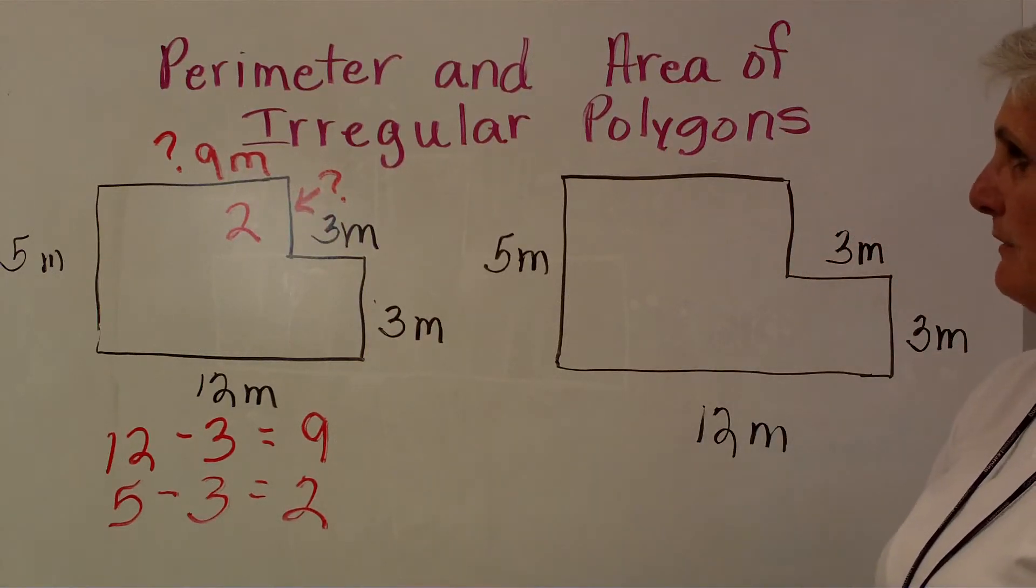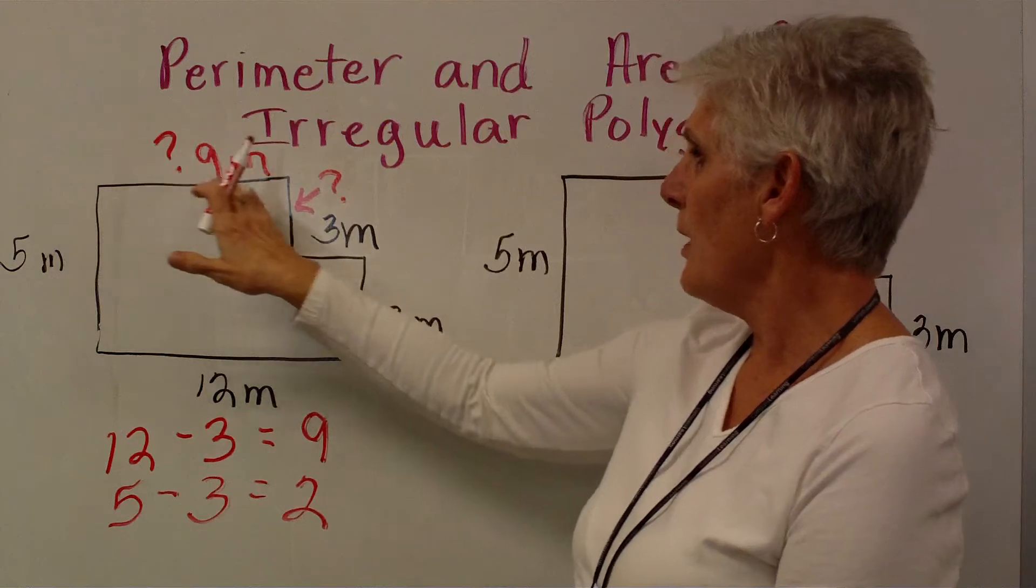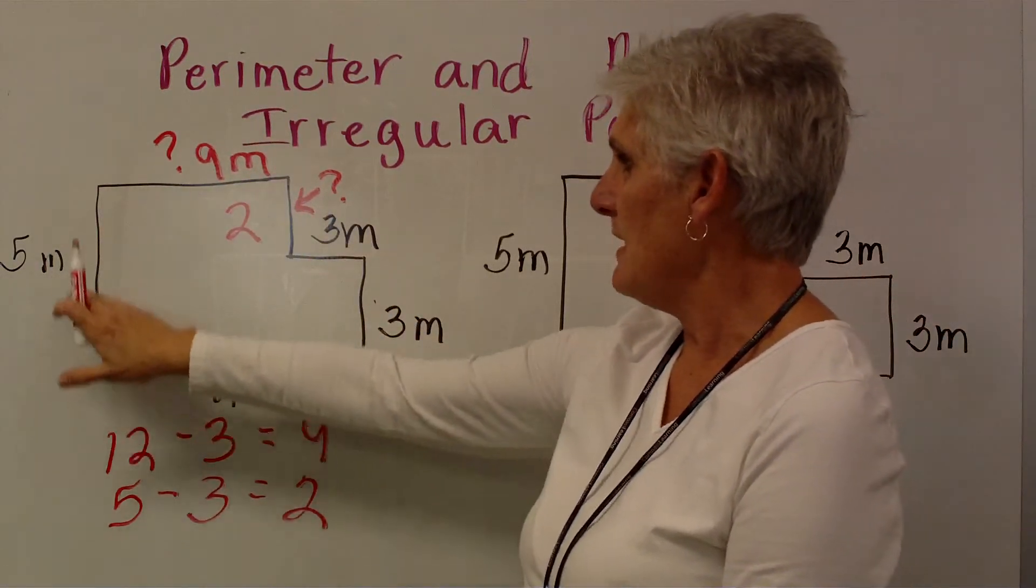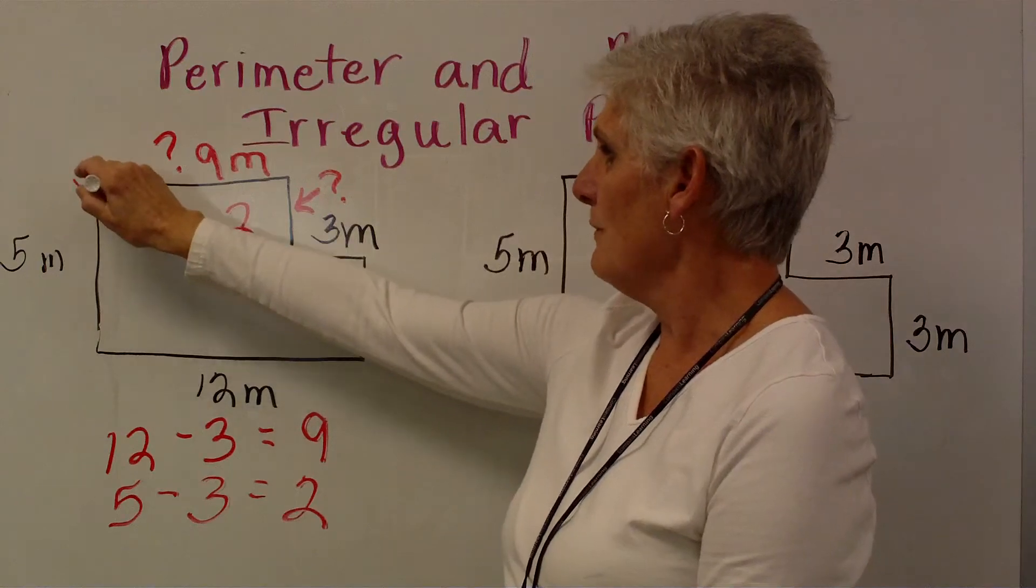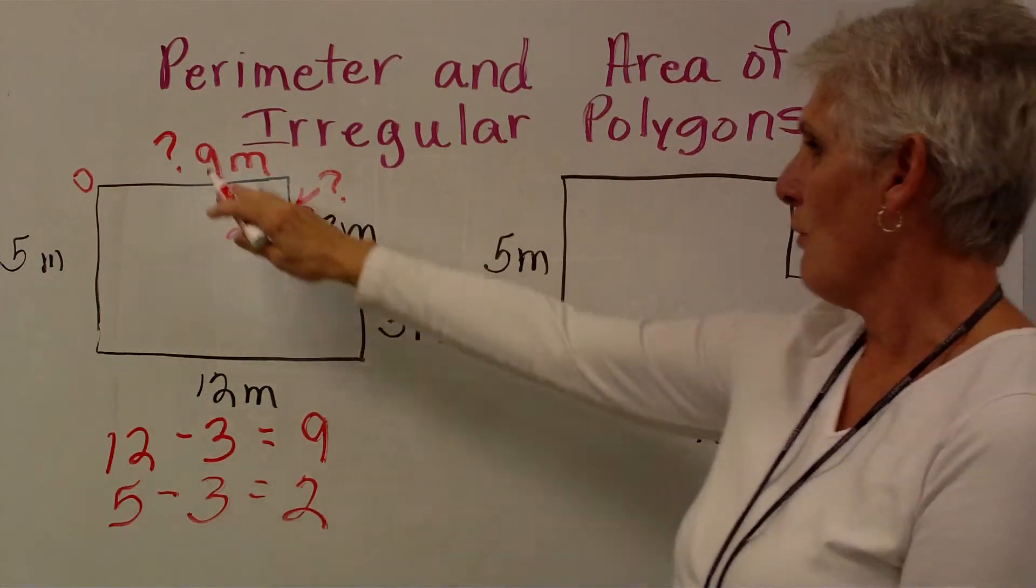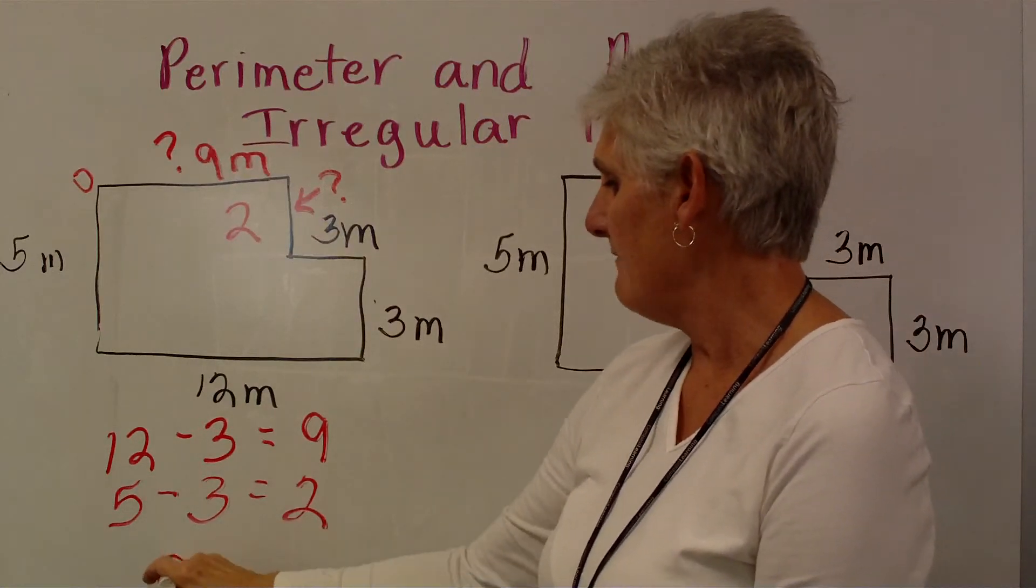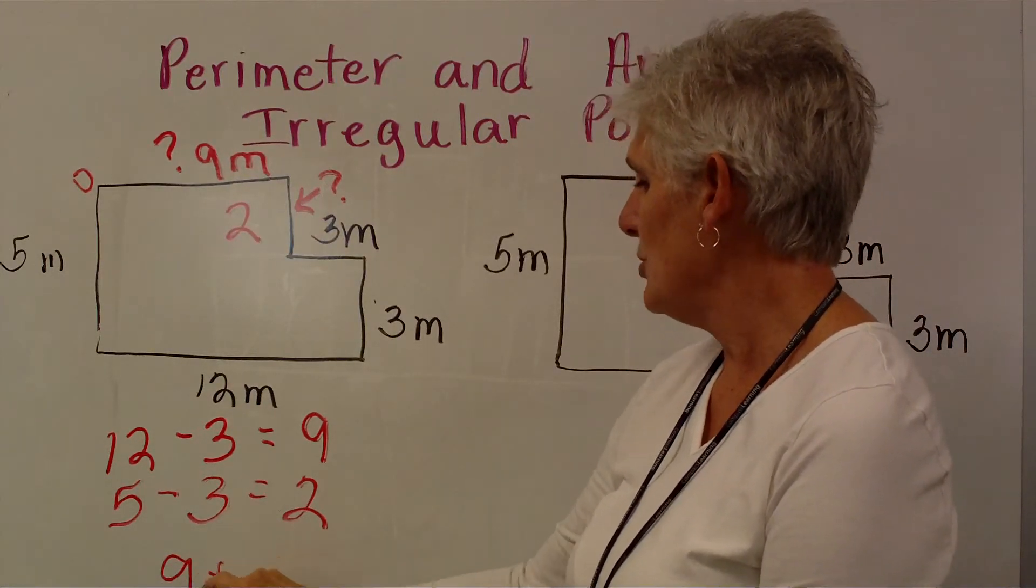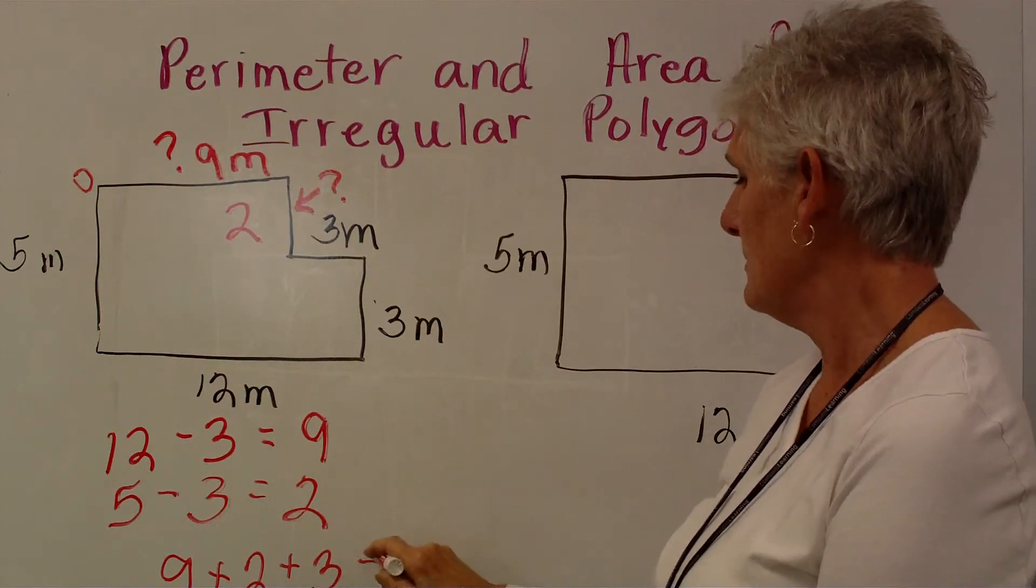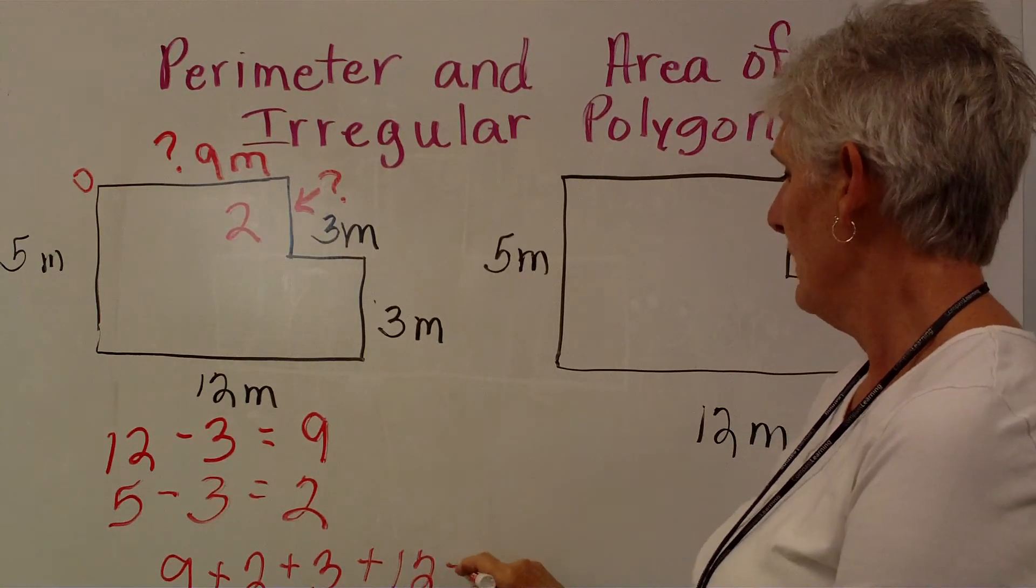All right, let's go back and review. Perimeter is all the way around the outside of my shape. What I want to do then is take this corner and as I travel around writing my numbers down. I have a 9, plus a 2, plus a 3, plus a 12, plus a 5.